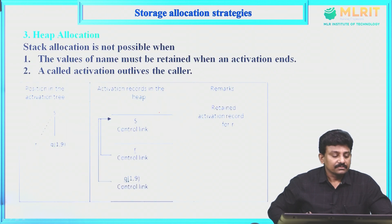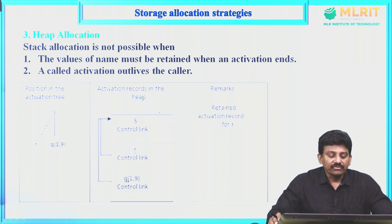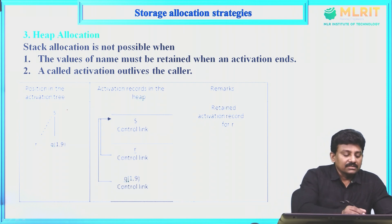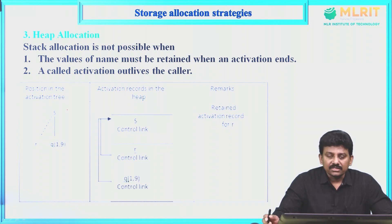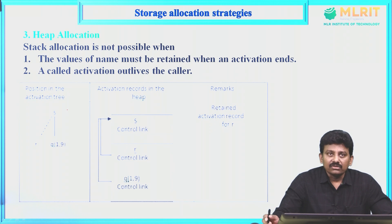Next, the third strategy: heap allocation. Stack allocation is not sufficient when the values of names must be retained after an activation ends, or when a called activation outlives the caller. In stack allocation, whenever a procedure ends we remove the activation record. But if we need to retain the values of names even after activation ends, stack allocation is not possible, so we use heap allocation.